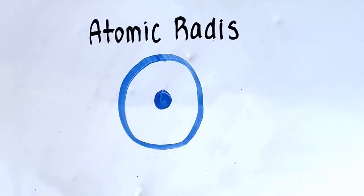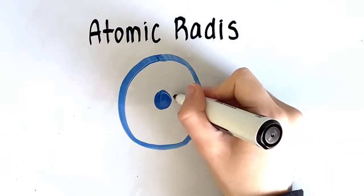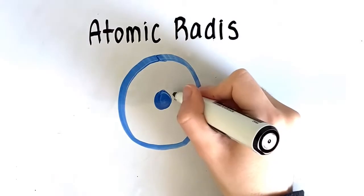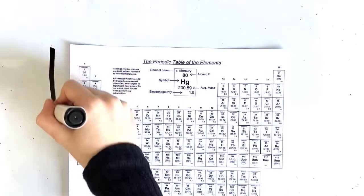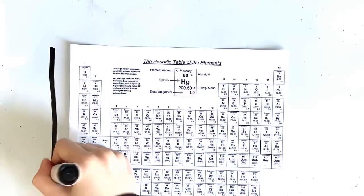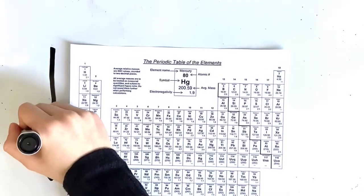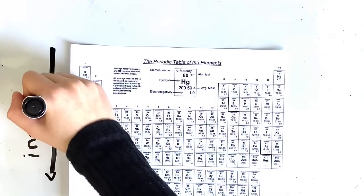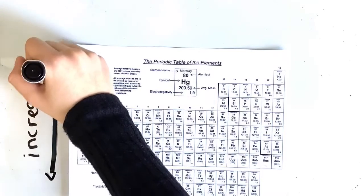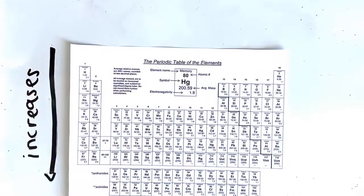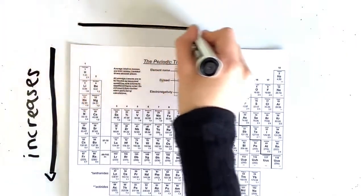The second periodic table trend is the atomic radius. The atomic radius is the distance from the center of the atom to the valence shell. As you go down a group, the atomic radius increases. This is because the number of protons and electrons increase; however, the electrons are added to new energy shells, increasing the number of shielding electrons. More shielding electrons means less pull the valence electrons feel from the nucleus, creating more space between the valence shell and the nucleus, therefore giving the atom a larger radius.